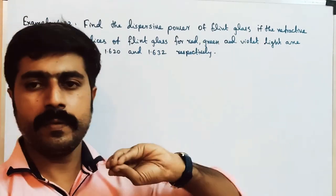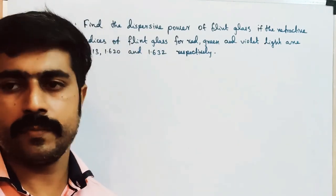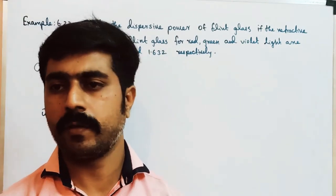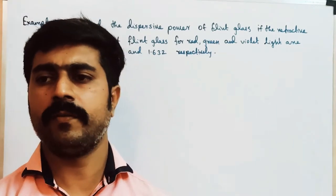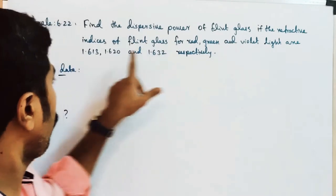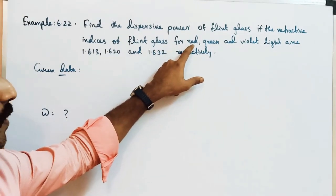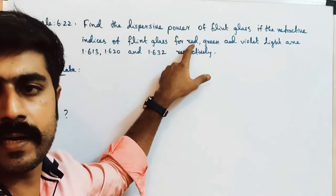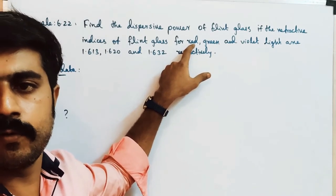In the lab we have 2 types of prism used, made up of glass: one flint and one crown. So there are 2 refractive index values. If the refractive indices of flint glass for different colors — red, green, violet — each color has a different refractive index.